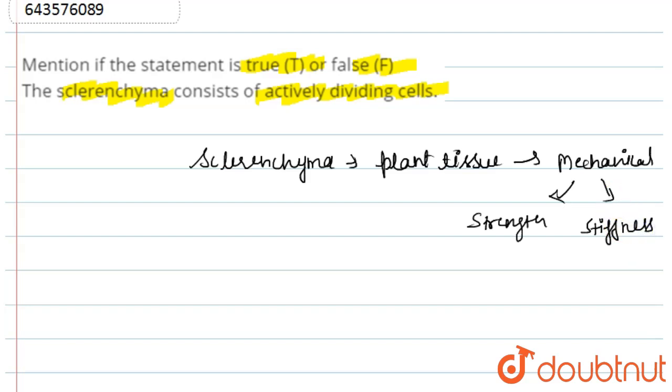Fibers and sclerates are the main types of sclerenchyma cells. Most sclerenchyma cells show intrinsic growth. Now, if you talk about whether the statement is true or false,